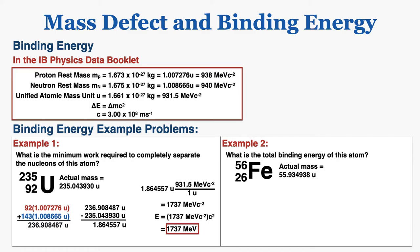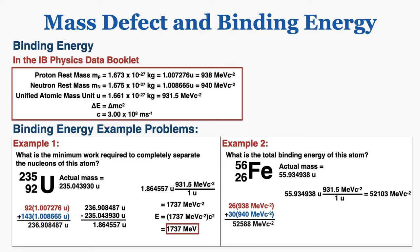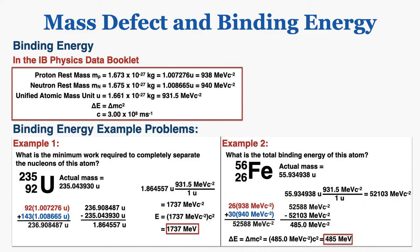Example two asks for the total binding energy of an atom using a slightly different method. Since we know the energy contained in the mass of a proton and a neutron, we can find the total energy in all that mass before the protons and neutrons combine, then convert the actual nucleus mass into its energy equivalent. Subtracting the actual nuclear energy from the original individual particle energies gives the change in mass-energy, which equals the binding energy: 485 mega electron volts.